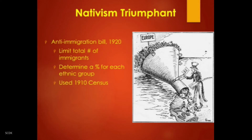Woodrow Wilson pocket vetoed the bill on his way out — meaning he didn't sign it or veto it, he just left it alone — but Warren G. Harding signed it soon after becoming president. In May 1922 it was extended for another two years, which set up a great debate over immigration in the election year of 1924.